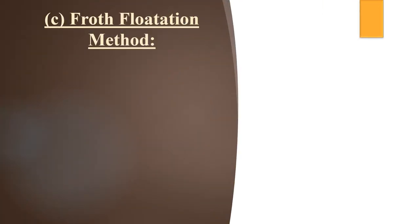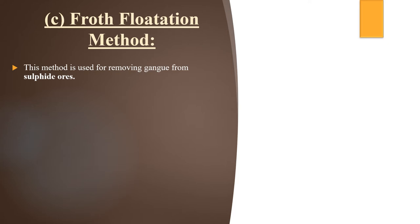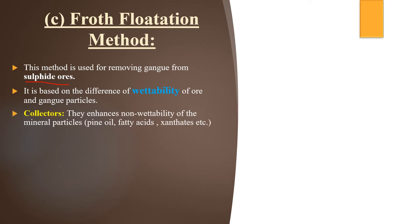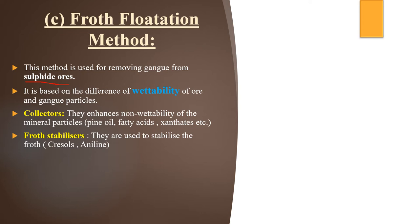The froth flotation method is used for removing gangue from sulfide ores — it is specific to the concentration of sulfide ores. It is based on the difference in wettability of ore and gangue particles. Collectors such as pine oils, fatty acids, and xanthates are used to enhance the non-wettability of mineral particles. Froth stabilizers such as cresols and aniline are added to stabilize the froth.